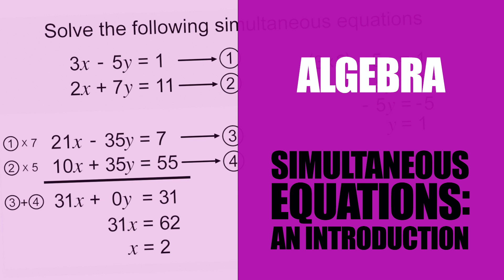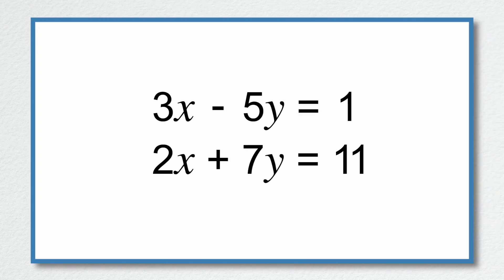We are going to explore simultaneous equations by looking at these two equations here. 3x subtract 5y is equal to 1 and 2x add 7y is equal to 11.